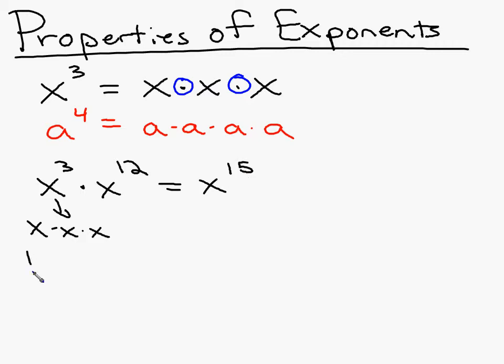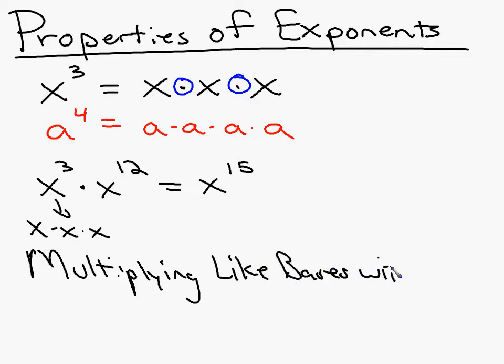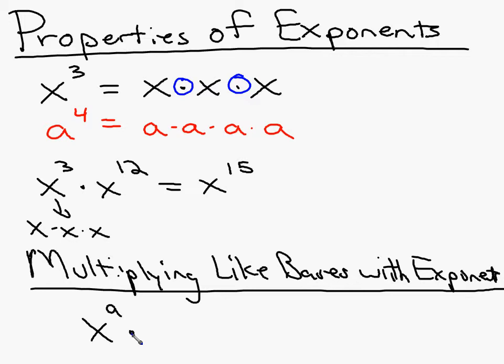So, multiplying like bases with exponents. The description of the property is a lot longer than the property itself. I promise you. Let's say that I have x to the a power times x to the b power. That does say like bases.